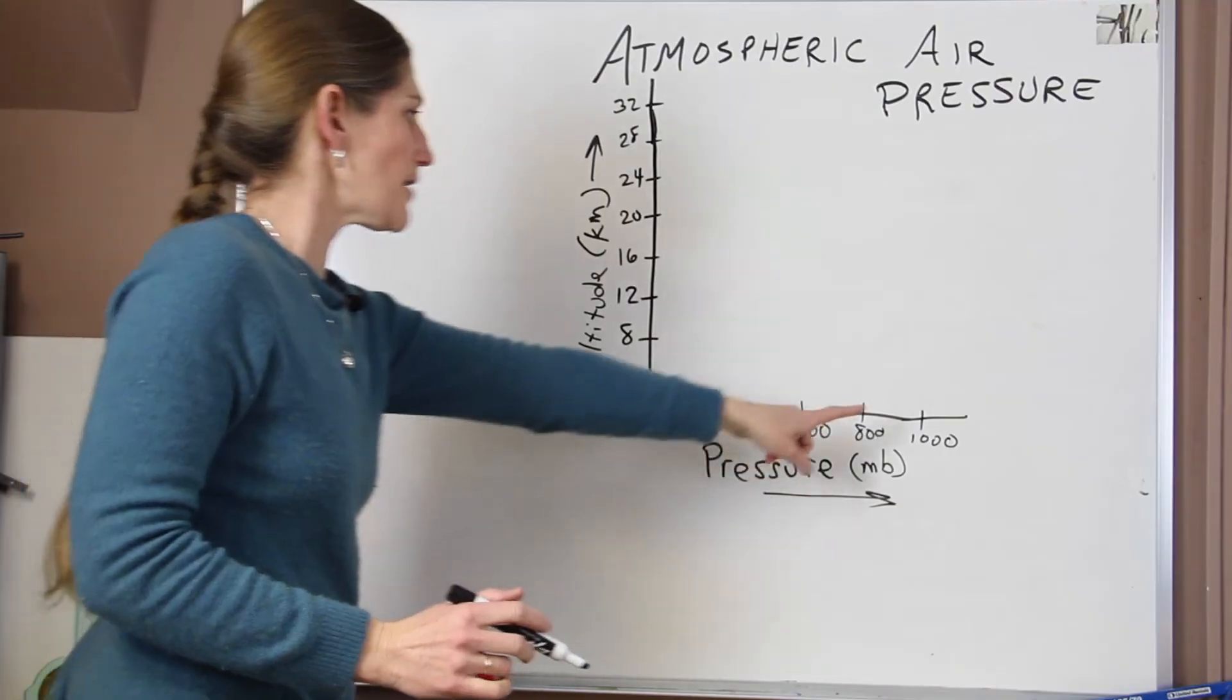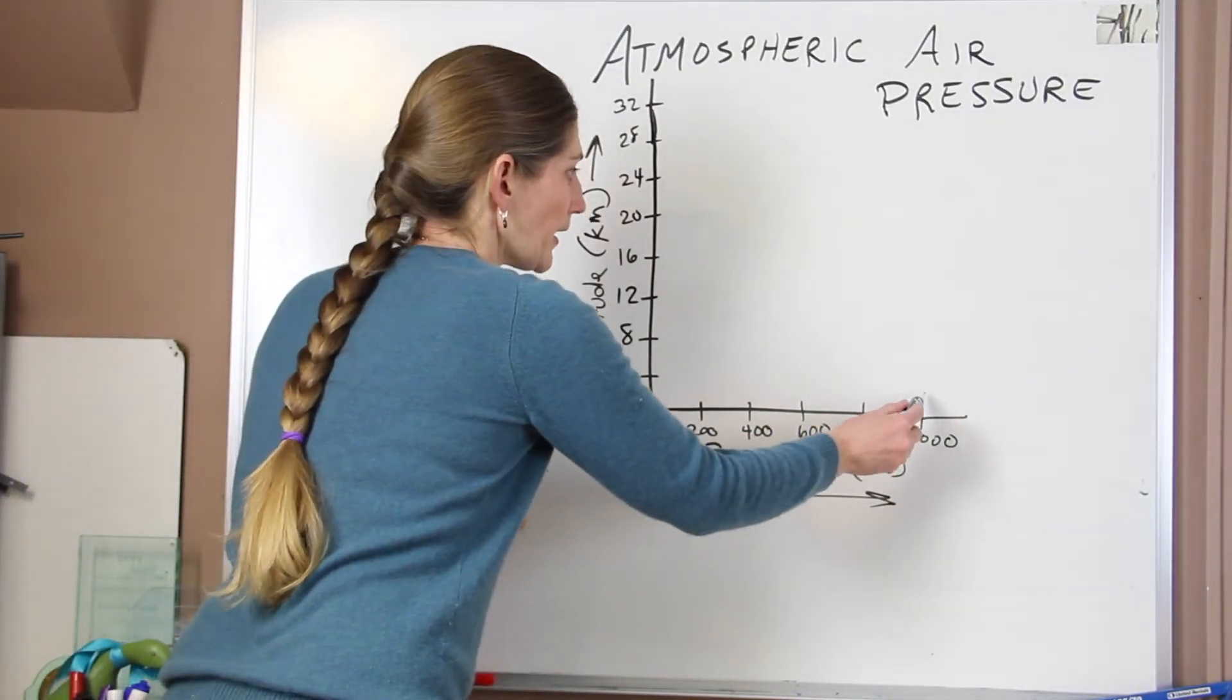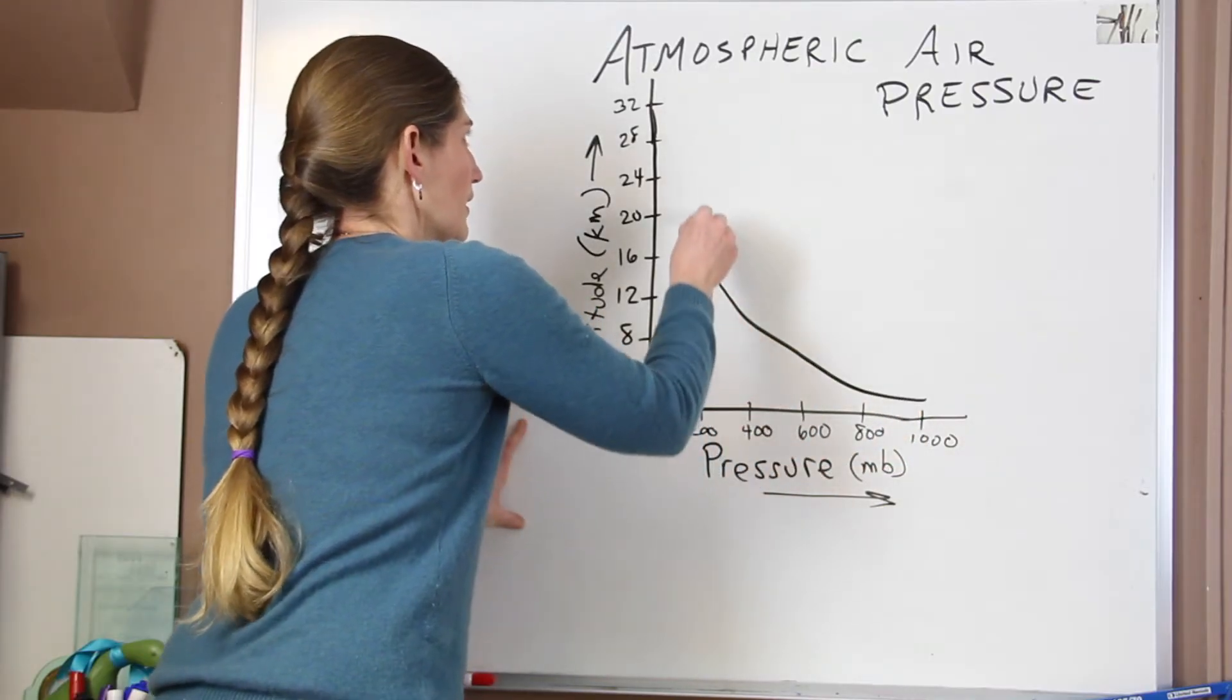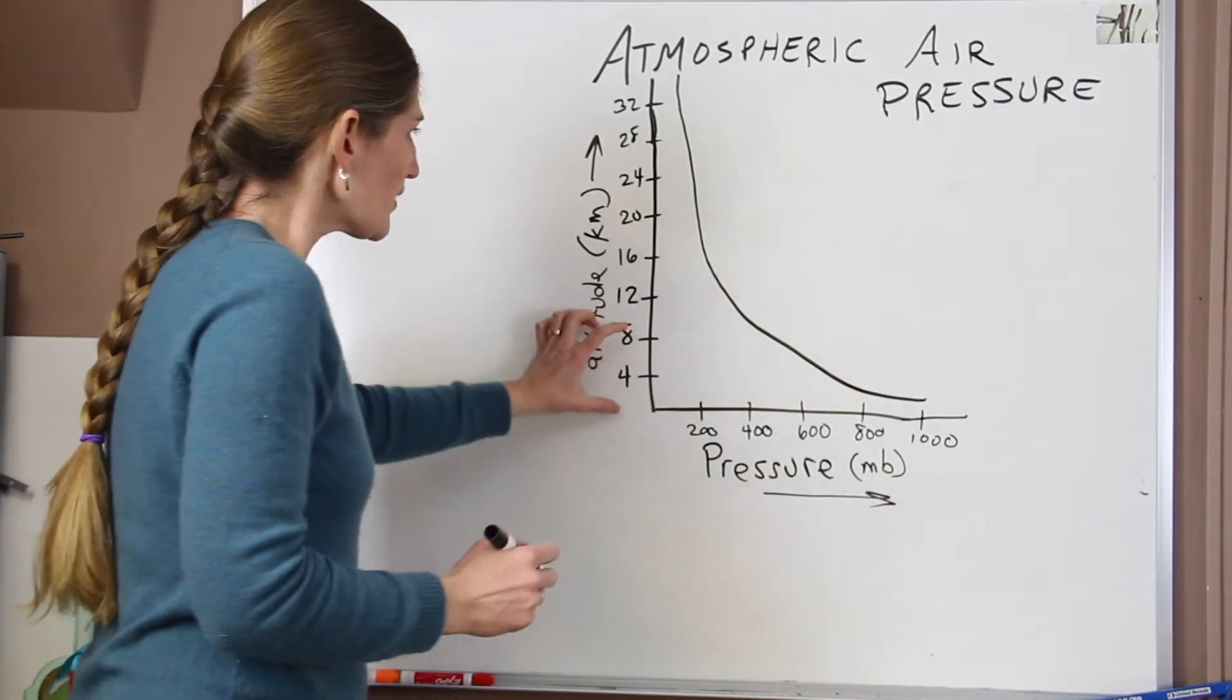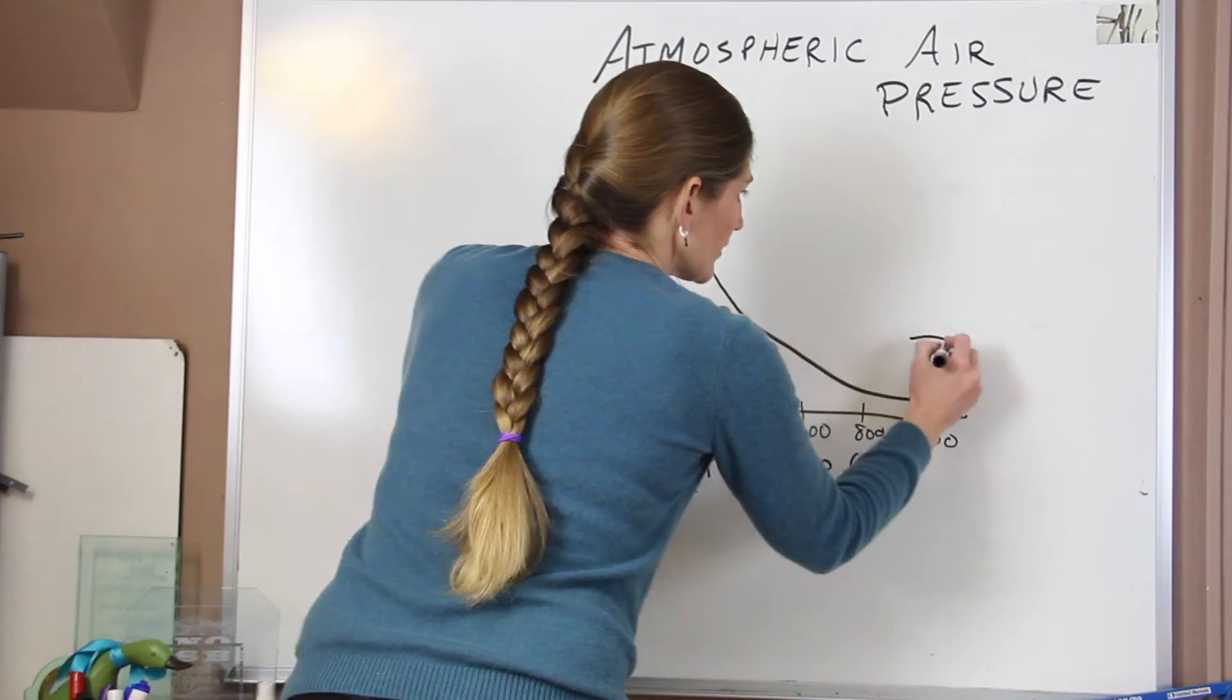So when we start down at sea level, the air pressure is really high, and it's going to increase like that. More or less like that. What we find is that the fastest rate of change is down here at the bottom.